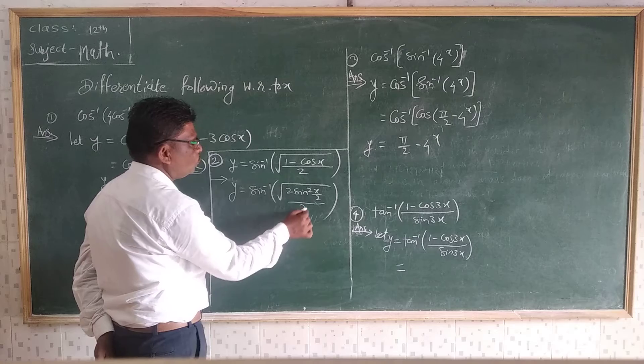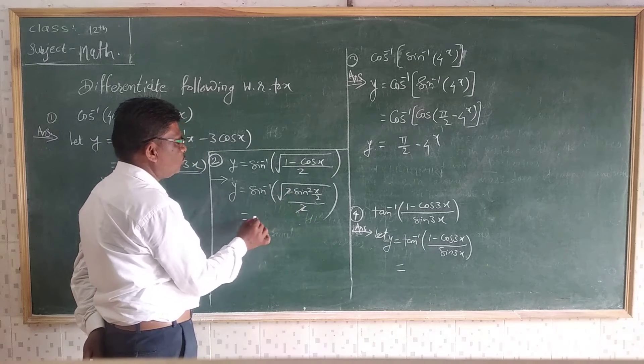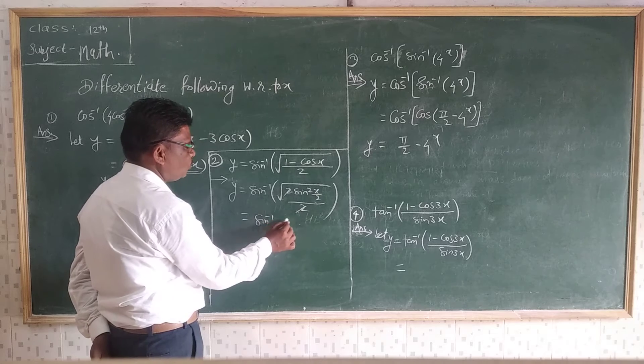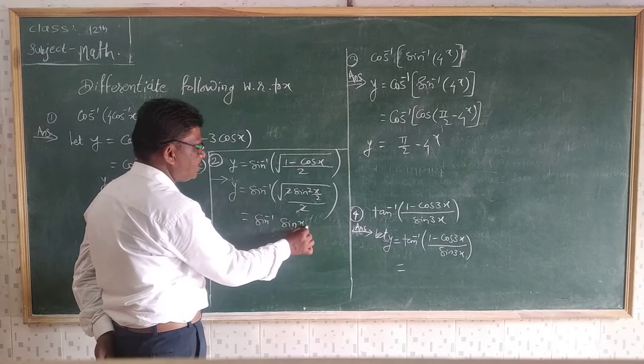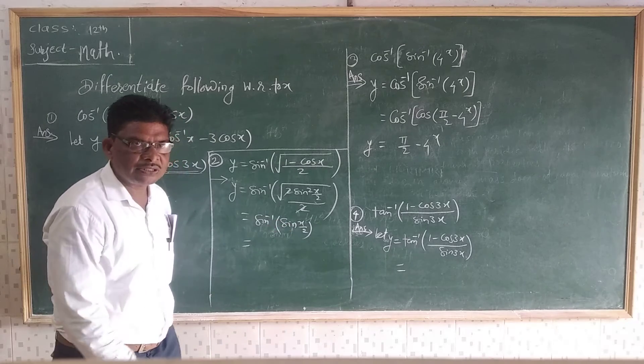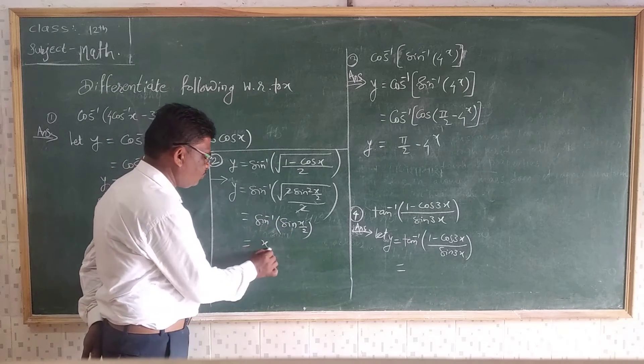That is X/2 upon 2. So 2 and 2 getting cancelled. Remaining here sin inverse of sin(X/2). So that is root getting cancelled. Sin inverse of sinX is X. That is your X/2.